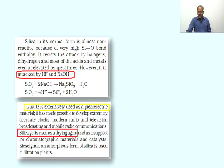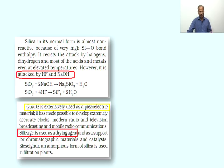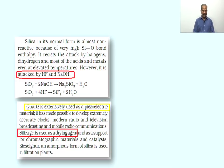An important crystallographic form of silica is quartz, which is extensively used as a piezoelectric material. This has made possible the development of extremely accurate clocks, modern radio and television broadcasting, and mobile radio communications. Silica gel is an important form of SiO₂ used as a drying agent and as a support for chromatographic materials and catalysts. Kieselguhr, an amorphous form of silica, is used in filtration plants.